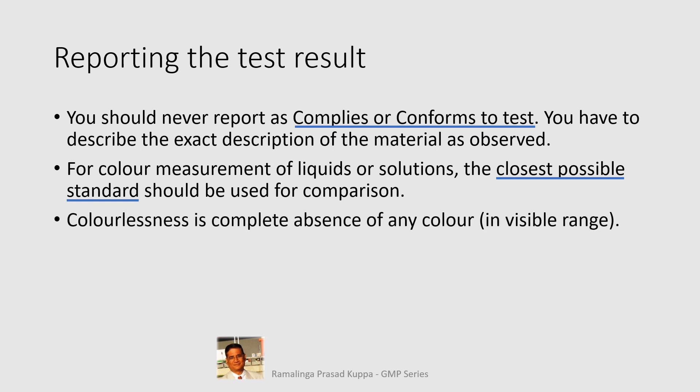Colorlessness is the complete absence of any color in the visible range. Colorlessness means there is no color in the visible range of 400 to 700 nanometers — it is as clear as water. Most colorless solutions are therefore compared with water as the standard in the second color comparison tube.